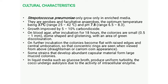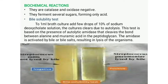Autolysis in liquid culture is due to intracellular enzyme activity and can be enhanced by bile salts or other surface active agents. In biochemical reactions, Streptococcus pneumoniae are catalase and oxidase negative. They ferment several sugars producing only acid, not gas. Fermentation of inulin is a useful test for differentiating S. pneumoniae from other streptococci, as other streptococci do not ferment inulin.